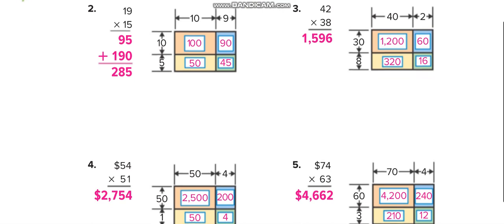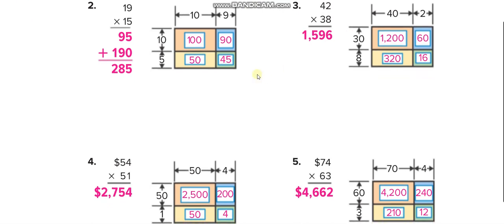I will show you how to make the area model. We make 4 boxes. The top line shows the top number broken into parts: 19 becomes 10 and 9; 15 becomes 10 and 5; 42 becomes 40 and 2; 38 becomes 30 and 8; 54 becomes 50 and 4; 51 becomes 50 and 1; 74 becomes 70 and 4; 63 becomes 60 and 3.